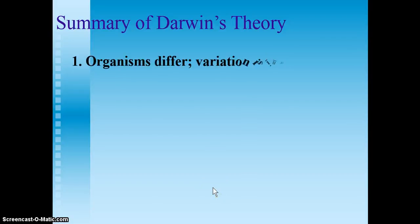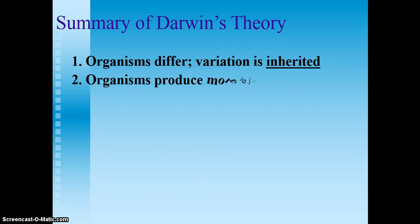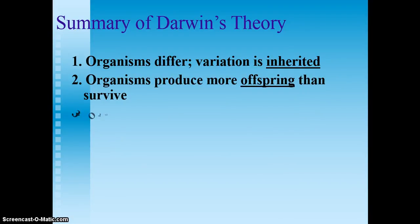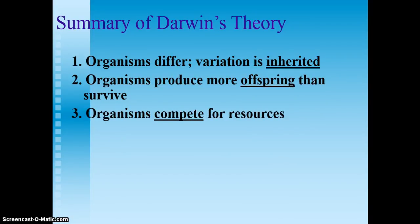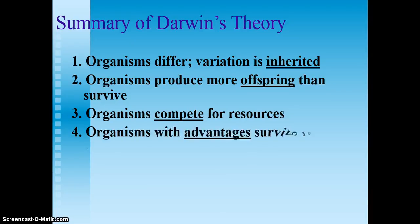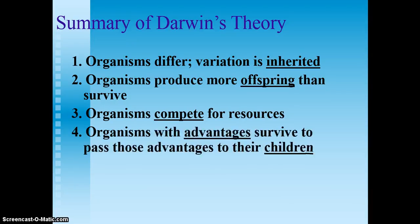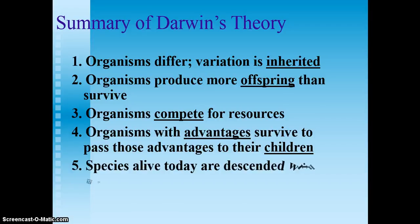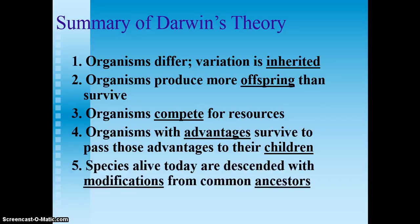In summary, Darwin's theory: organisms differ and variation is inherited. Organisms produce more offspring than survive. Organisms compete for resources. Organisms with advantages survive to pass those advantages on to their children. And species alive today are descended with modifications from common ancestors.